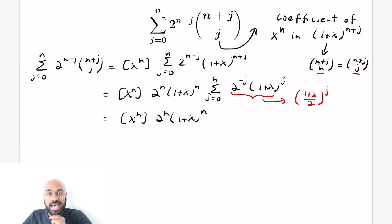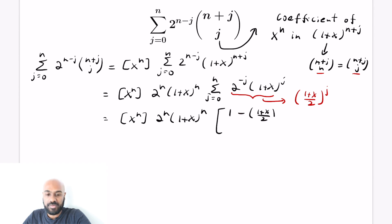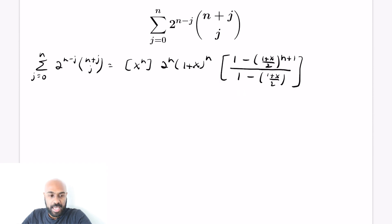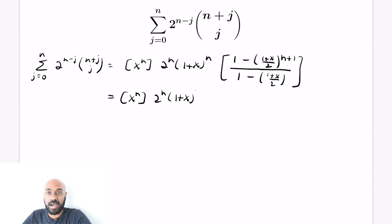We can write this sum in a compact way, recognizing it as a sum of powers of the polynomial (1 plus x) over 2. So this is the x to the n coefficient of 2 to the n times 1 plus x to the n, multiplied by the geometric series with ratio (1 plus x) over 2. Using the geometric series formula for j equals 0 to n gives us: 1 minus (1 plus x over 2) to the n plus 1, all over 1 minus (1 plus x over 2).